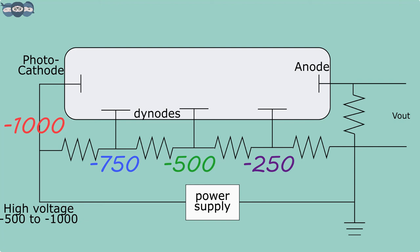Each dynode is maintained at successively less negative potential. The cathode is placed at negative high voltage, typically ranging from -500 volts to -1500 volts. When a photon strikes the photocathode, it ejects a photoelectron due to the photoelectric effect. This electron accelerates towards dynodes placed at higher potential.